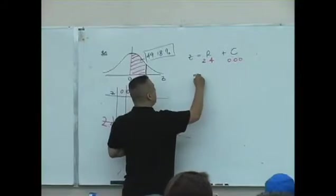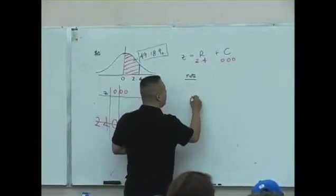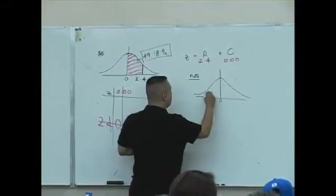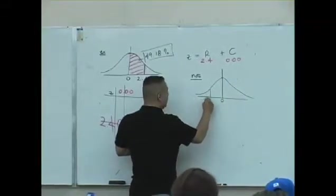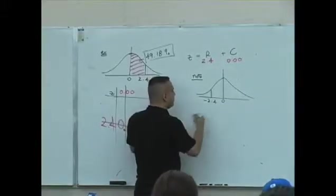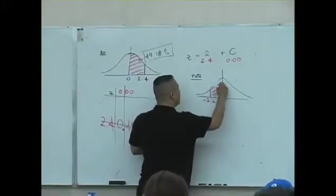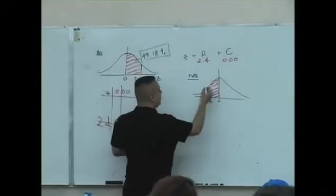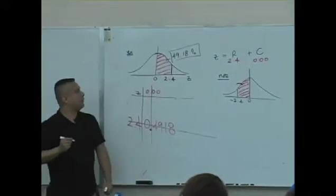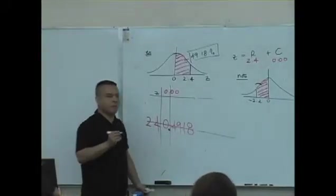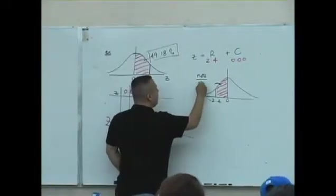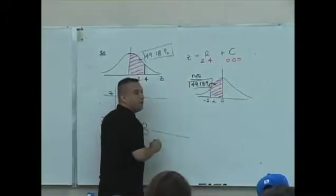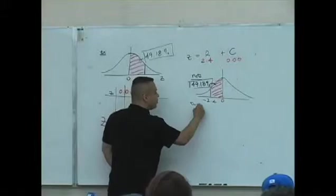What about the negative version? What if it was negative 2.4? What's the answer now? 49.18%. It's still the same. Why is it 49.18%? Because of what? Symmetry. Good.